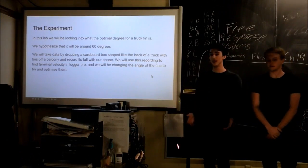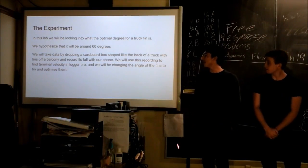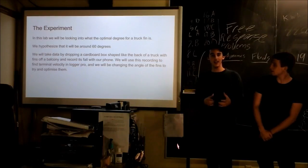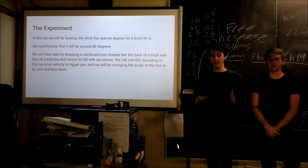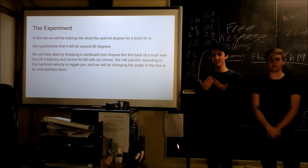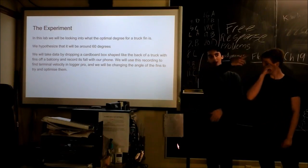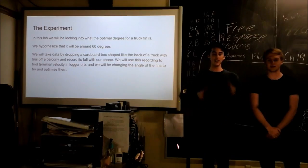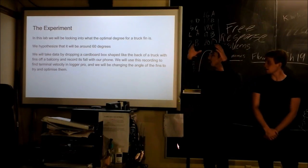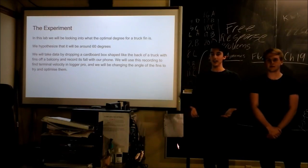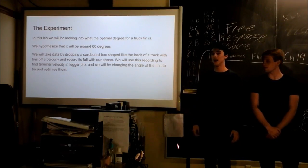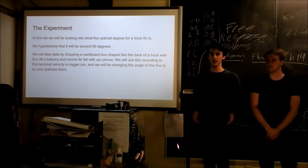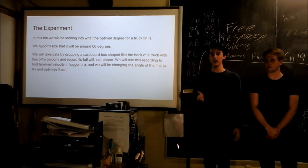We were looking into what the optimal degree to have the fins would be at. We hypothesized it would be around 60 degrees because we've seen trucks before and it kind of looked like it was around that. So we took data by creating this cardboard box where it had a base and then four flat fins sticking out of it, sort of like the back of a truck. We went to the stairwell and put it through fishing wire connected to the ground to keep it moving in a straight line. We would drop it, it would move along the fishing wire and fall down until it hit the ground, and we would take a video with our iPhones and do video analysis. We did three trials each time changing the angle — 30, 60, 90 — to determine what the best range of values for the angle of a truck fin would be.